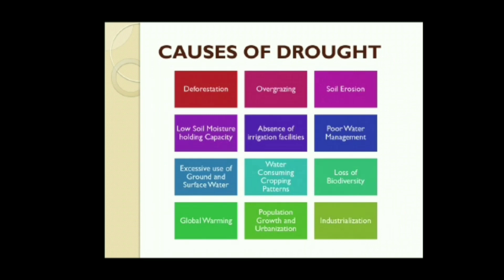Now the causes of drought: deforestation, overgrazing, soil erosion, low soil moisture holding capacity, absence of irrigation facilities, poor water management, excessive use of ground and surface water, water-consuming cropping patterns, loss of biodiversity, global warming, population growth, urbanization, industrialization, etc.